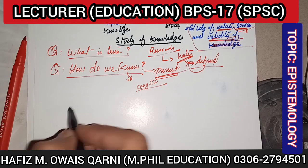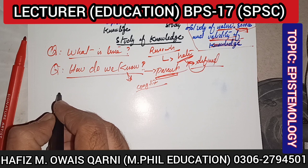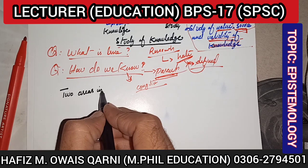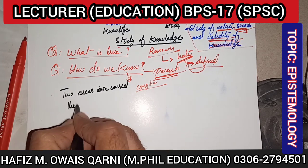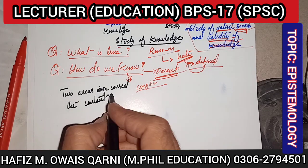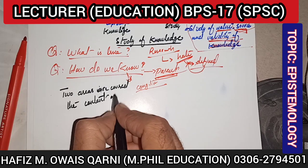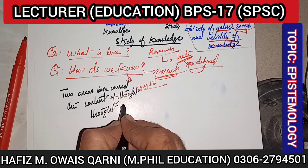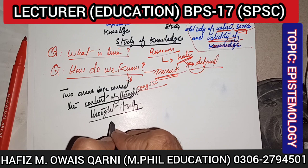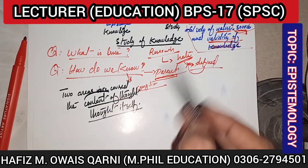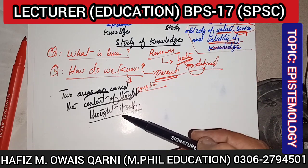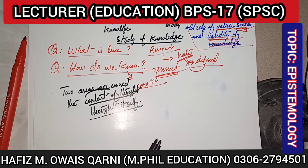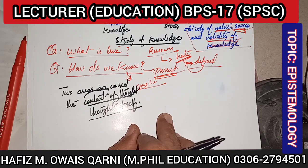Epistemology actually covers two areas. Number one is the content of thought — what you think about, what your content is regarding something. And number two is thought itself — what is the thought, what is the nature of anything? You understand the nature of a thing, then you have some content which you understand, and then you validate it.